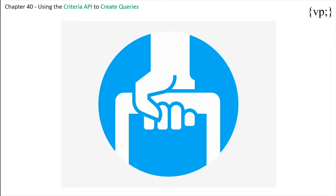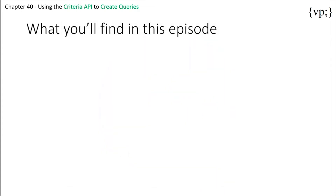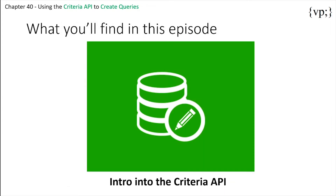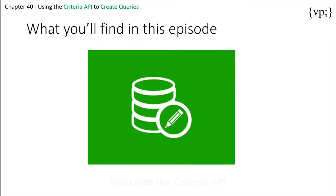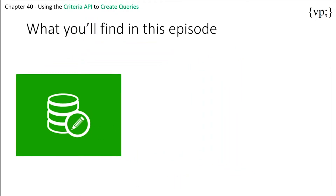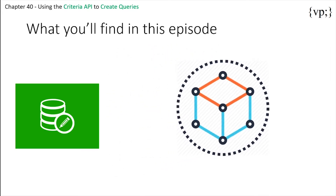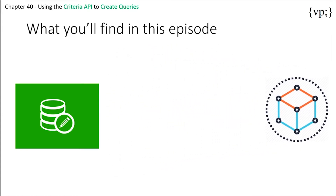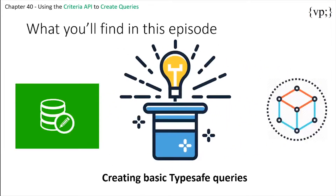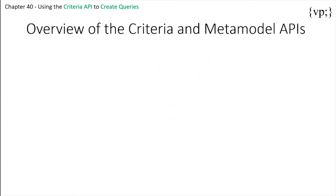So what you'll find in this episode: you will be going over a little introduction into the Criteria API, how it can be used to model entity classes, and create basic type safe queries. So now let's go into our overview of Criteria and Meta Model APIs.